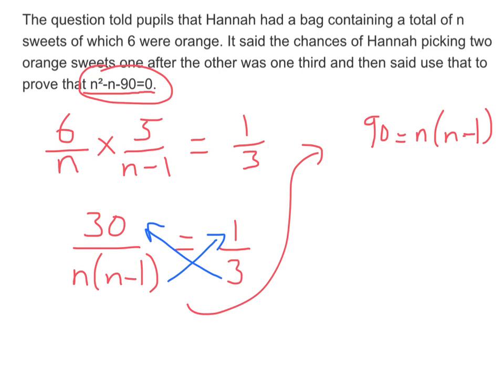And then I'm going to rearrange to get everything equal to 0 because I know this is the answer I want. So if I do it one stage at a time, n squared minus n, and then I'm going to get the 90 over to the other side by taking it away. So I end up with n squared minus n minus 90 equals 0.